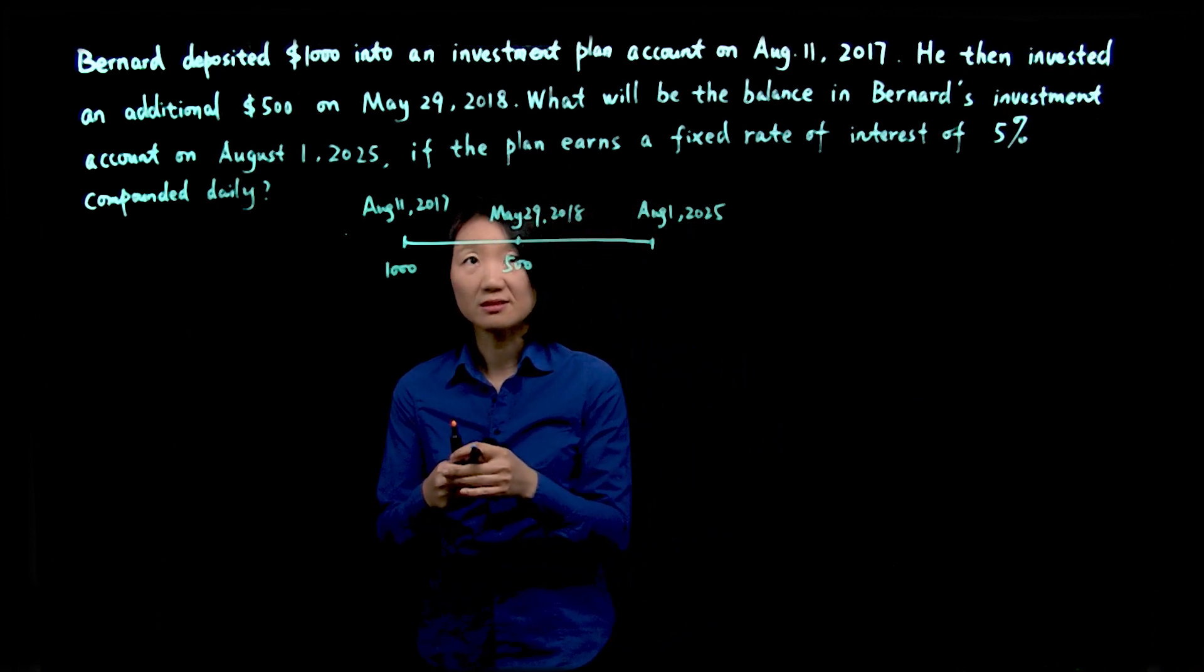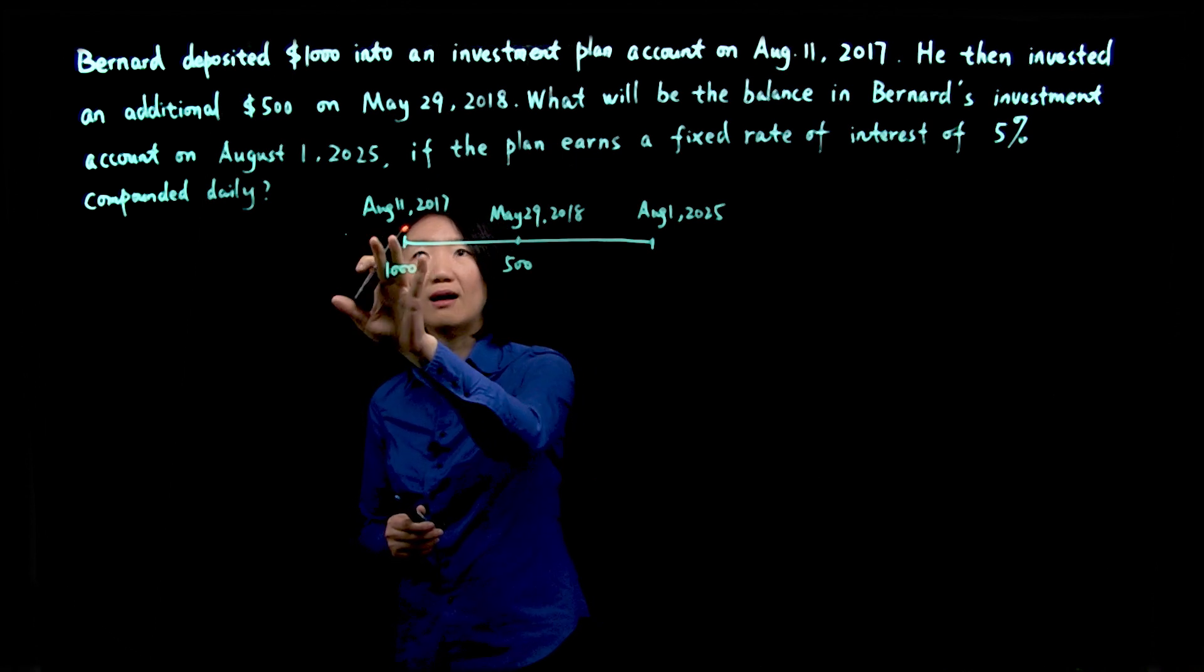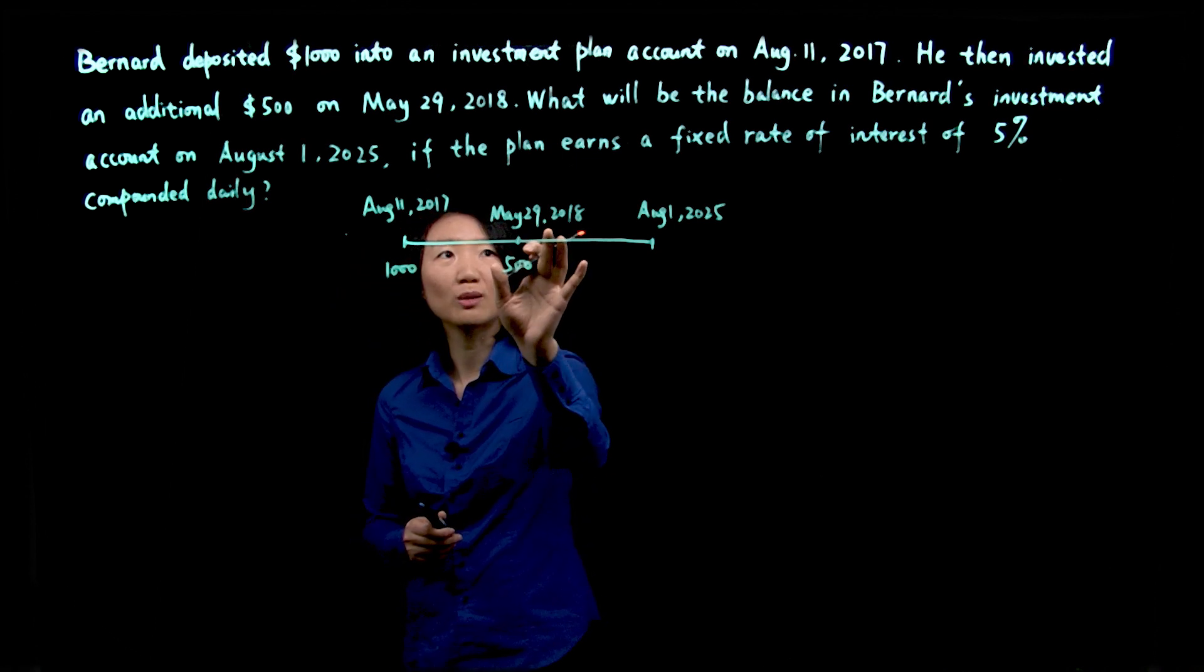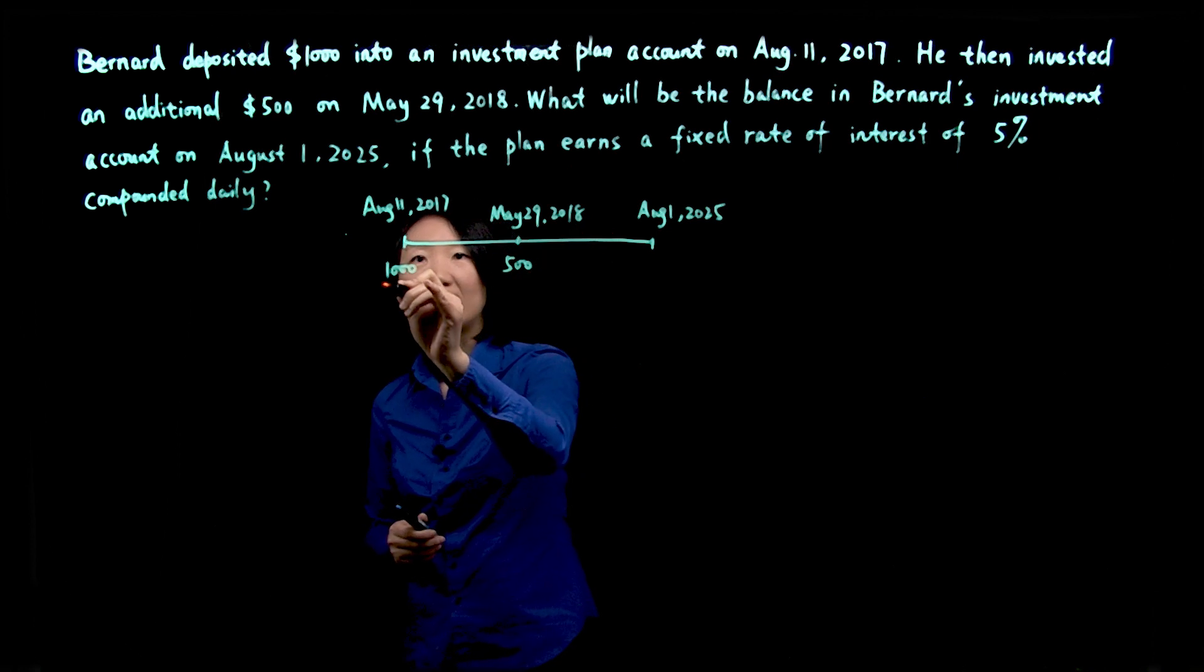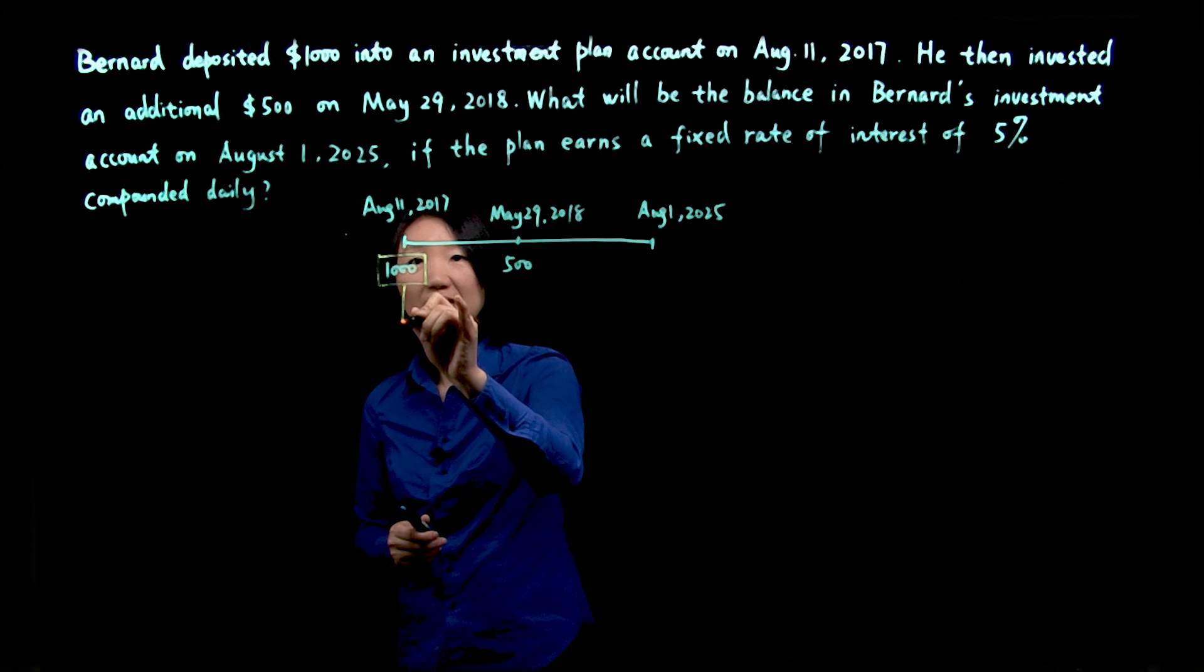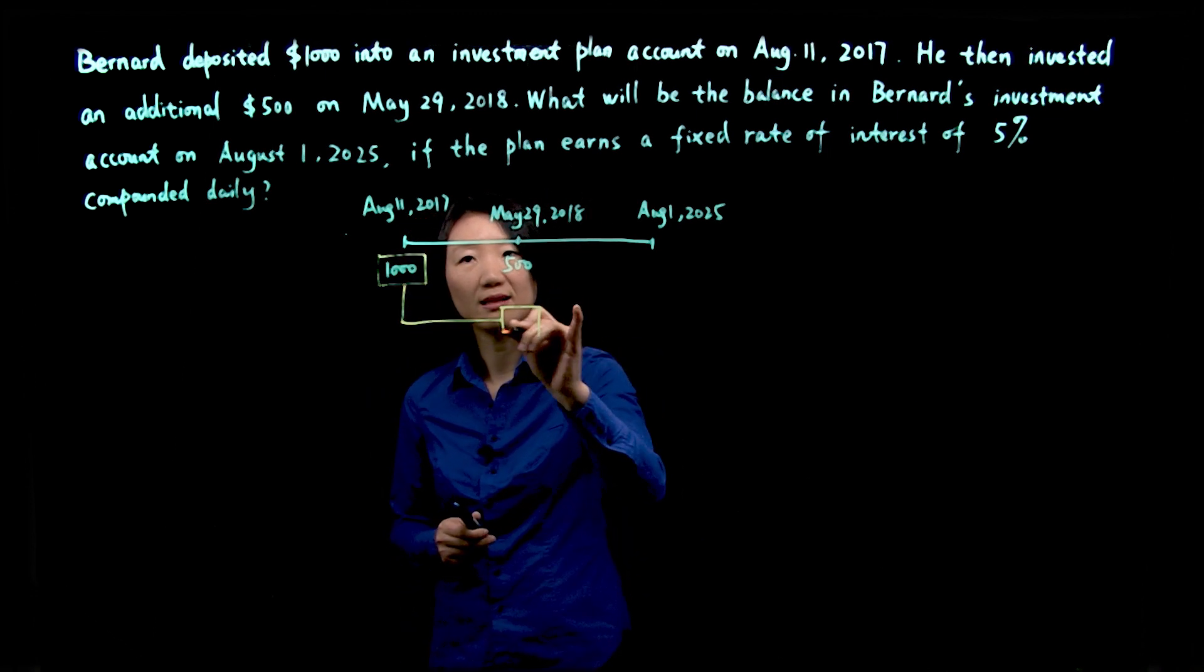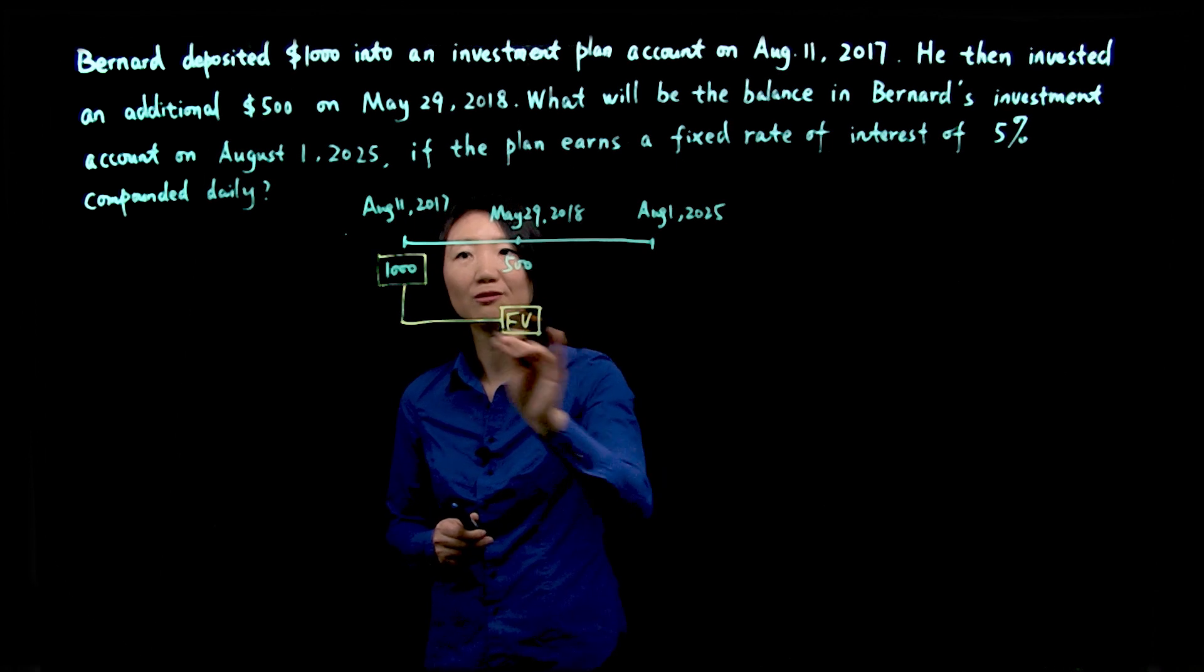So in this question, first we'll have to look at the time period between August 11, 2017 to May 29, 2018, because this $1,000 with compounding interest will allow us to calculate a future value.